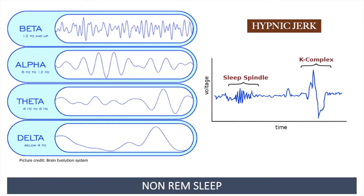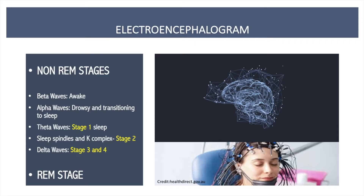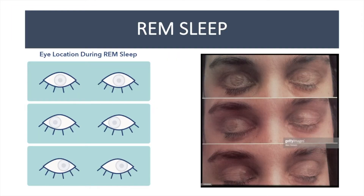At stages three and four, the brain starts to produce delta waves, also called slow waves, and at this stage sleep is the deepest. All these stages are called non-REM stages. The final stage of sleep is REM sleep, which is an abbreviation for Rapid Eye Movement sleep.